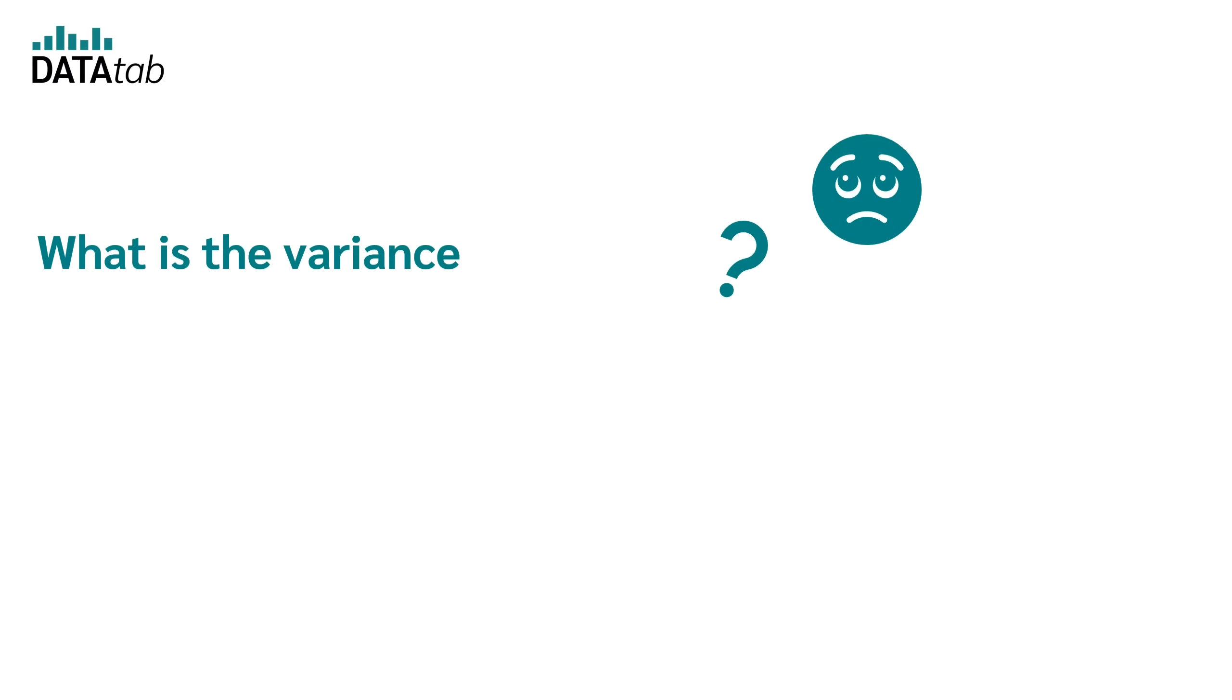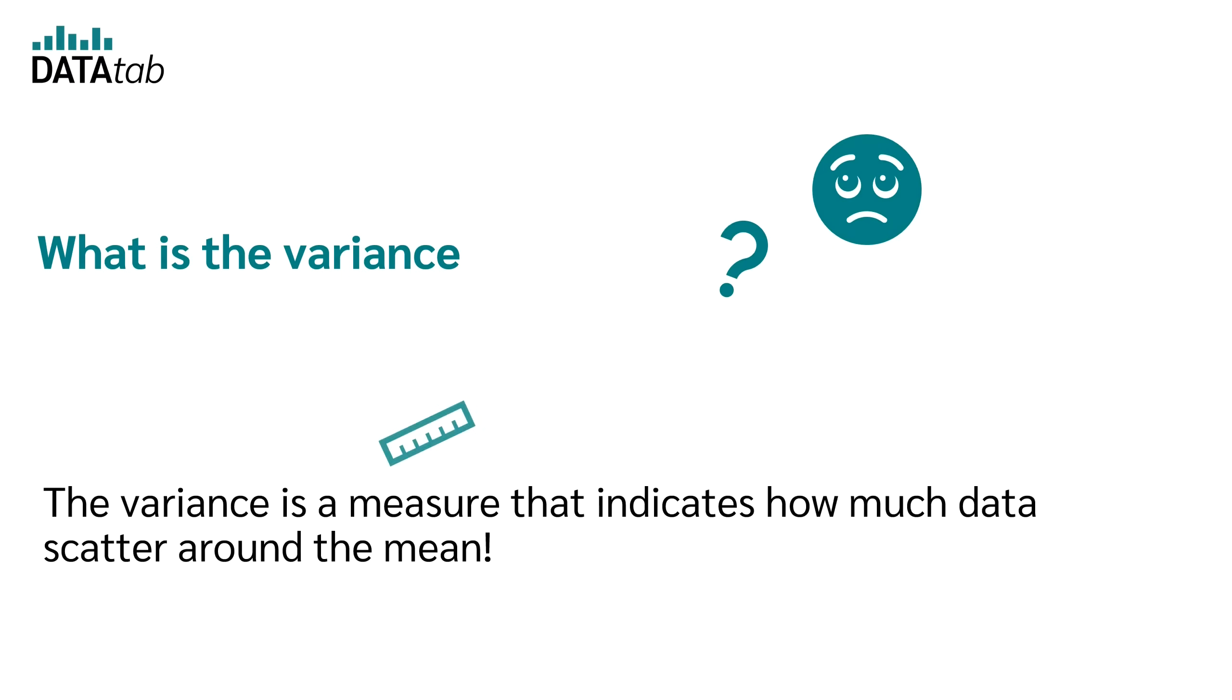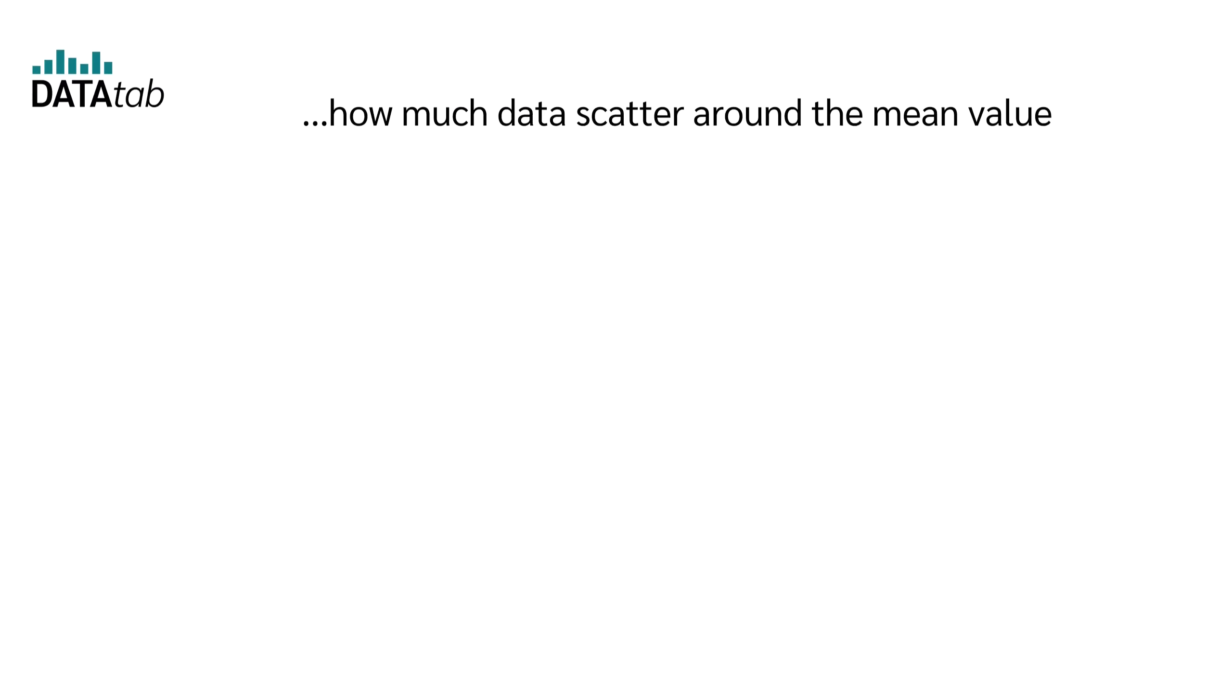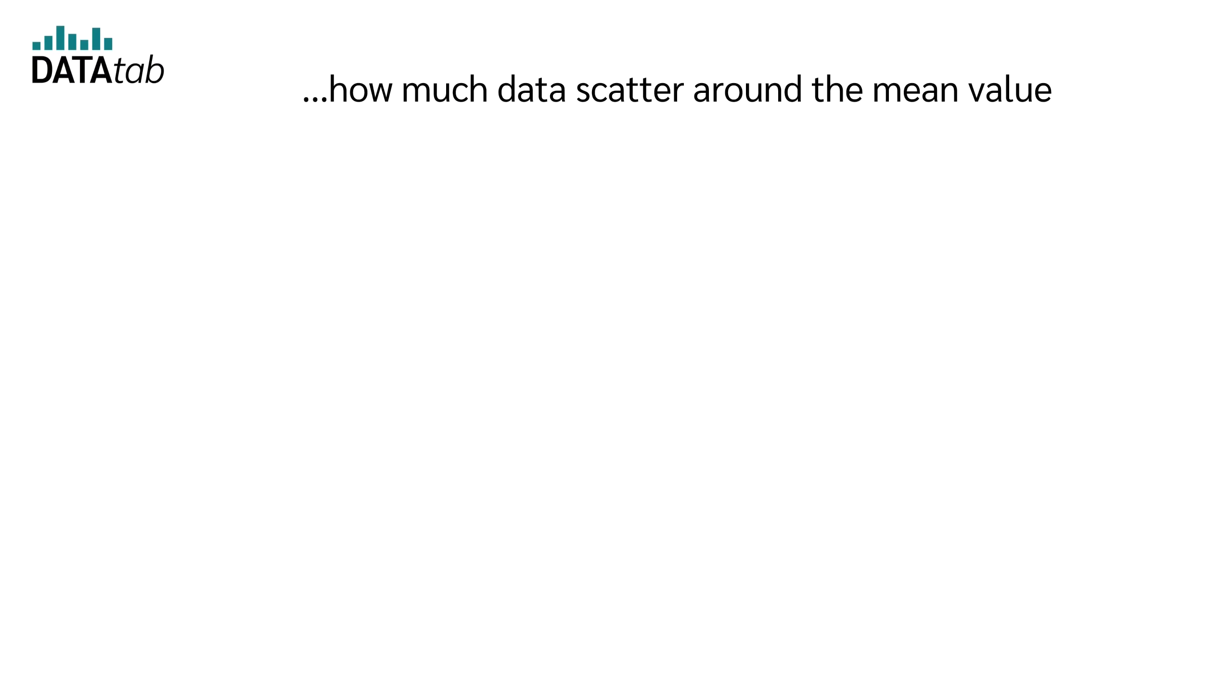What is the variance? The variance is a measure that indicates how much your data scatters around the mean. So the variance has something to do with the dispersion of your data.